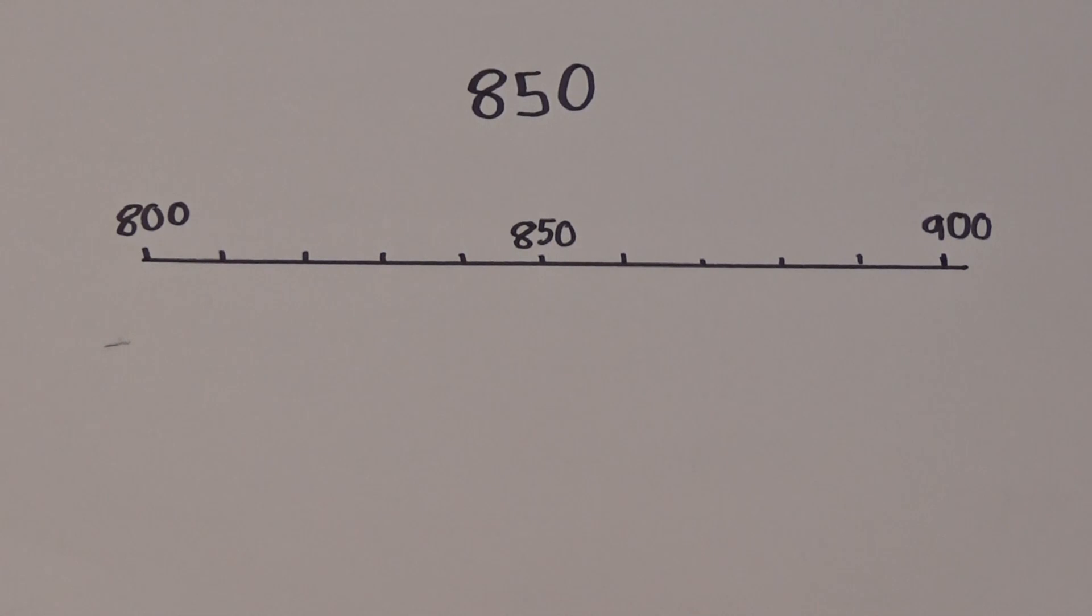When rounding, if the number falls directly in the middle like this, the rule is to always round up, so I need to round 850 up to 900.